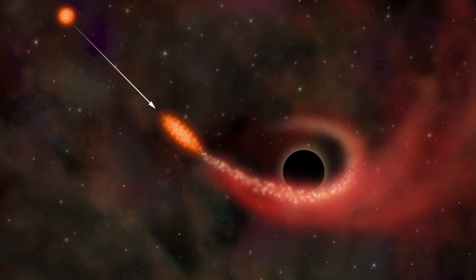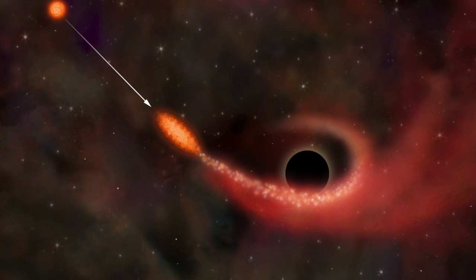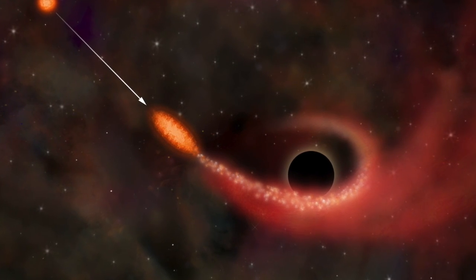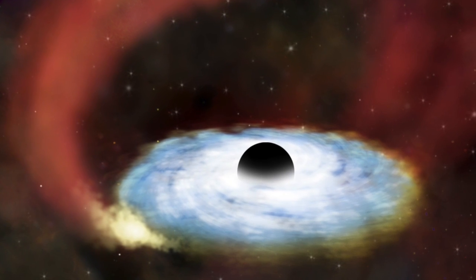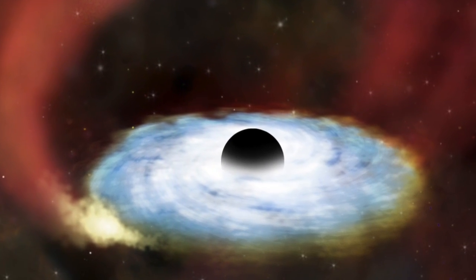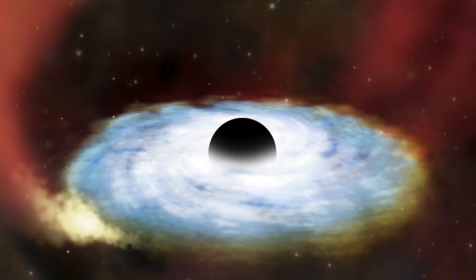A TDE occurs when a star's orbit brings it within the tidal disruption radius of a supermassive black hole, pulling the star apart. The disrupted material is then either ejected or accreted onto the black hole, resulting in a long-lasting luminous flare.